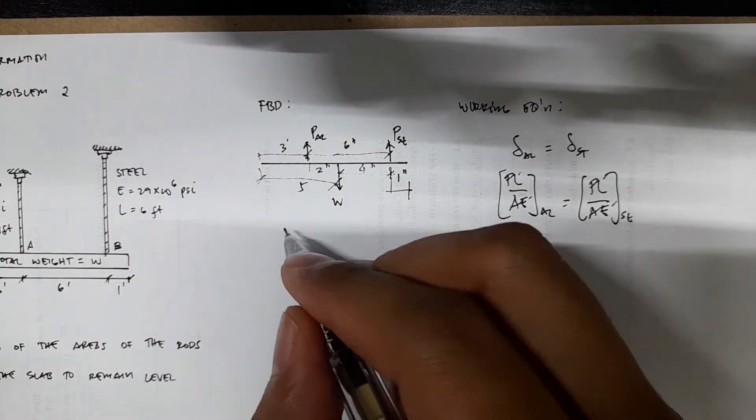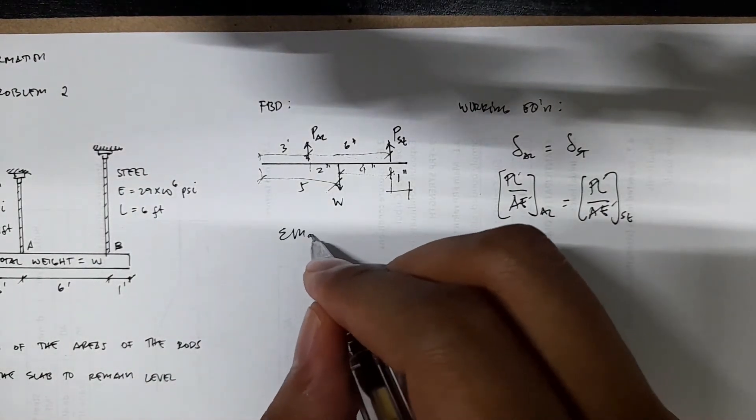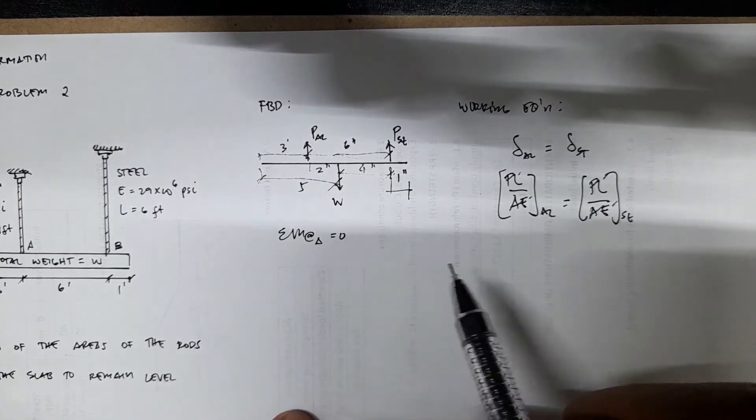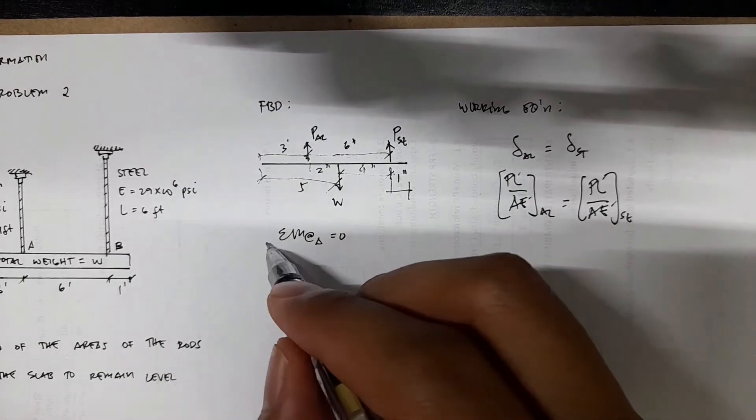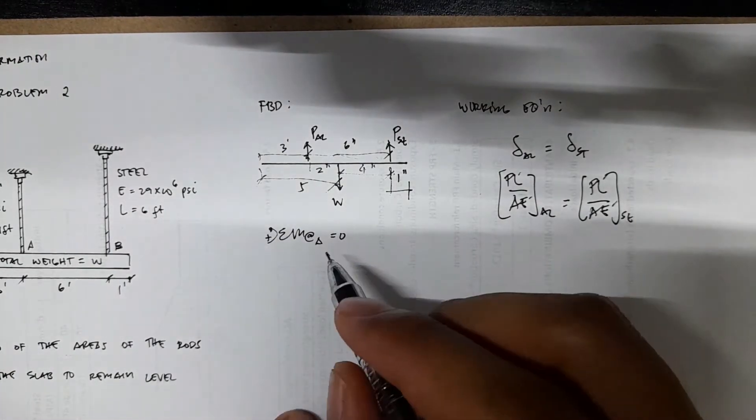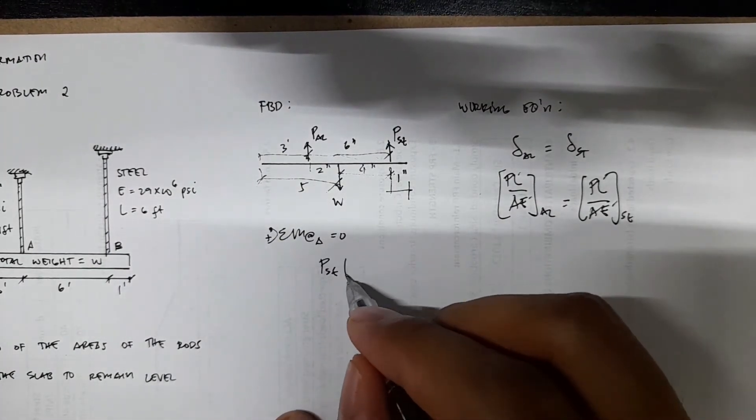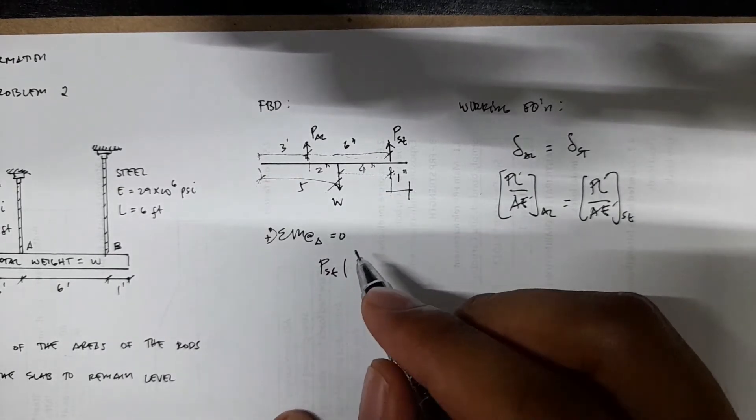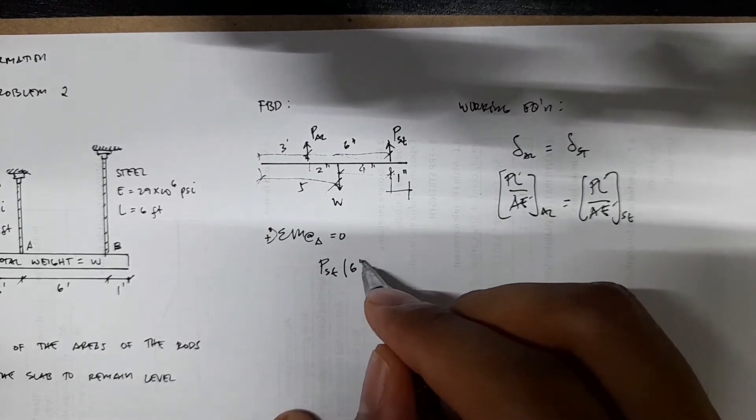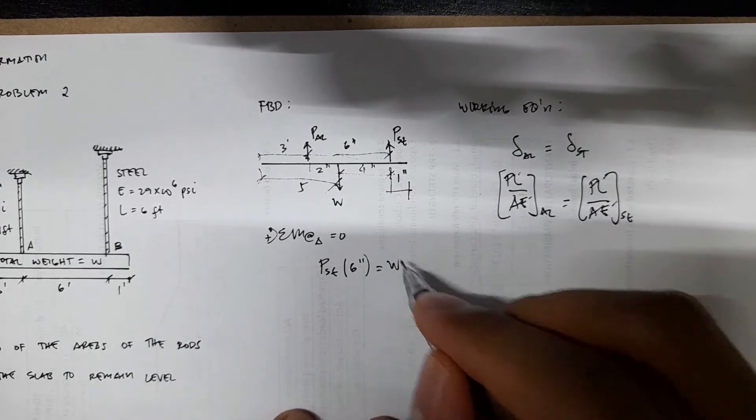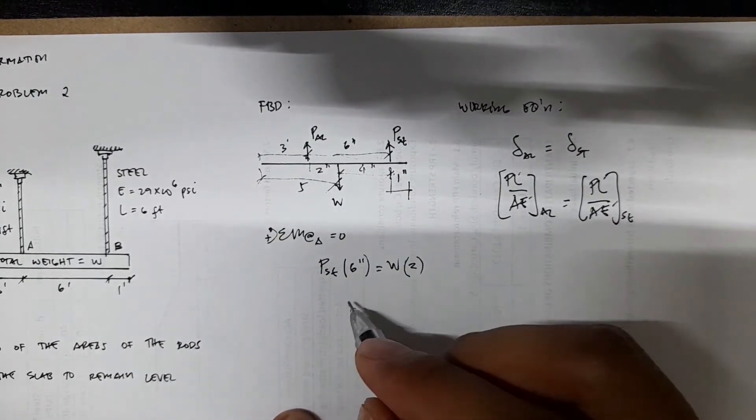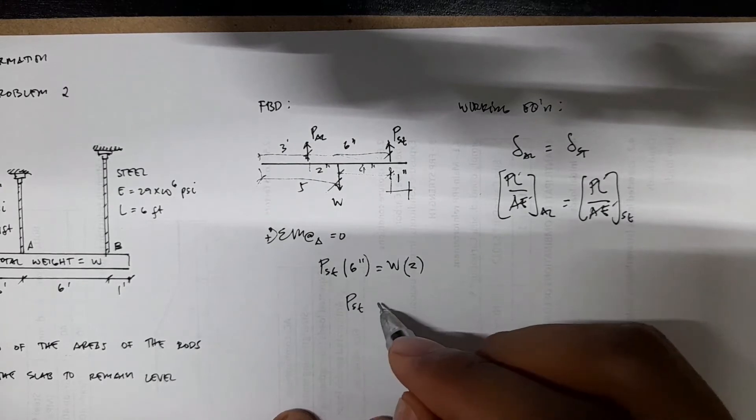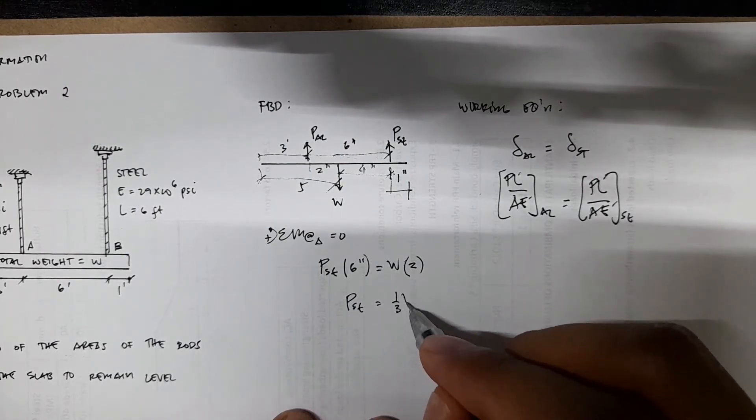First we sum up moments at A equals 0, just to eliminate the presence of the aluminum force. Taking clockwise as positive, we have P_ST times the moment arm of 6 inches equals W times the moment arm of 2, so we have P_ST equals one-third W.